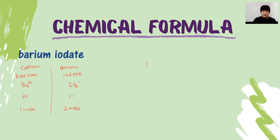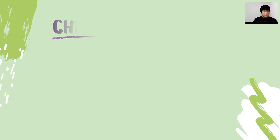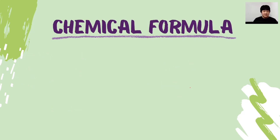Because 1 mole is 2+, and 2 moles of 1 minus gives 2 minus — the charges balance. Therefore, the chemical formula of barium iodate will be Ba 2+ and IO3 minus. Bring down the charge to the opposite side — cross method — so you have 1 mole of Ba and 2 moles of iodate. That is the chemical formula of barium iodate.